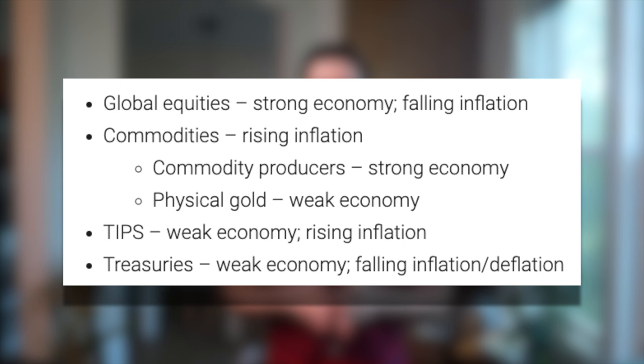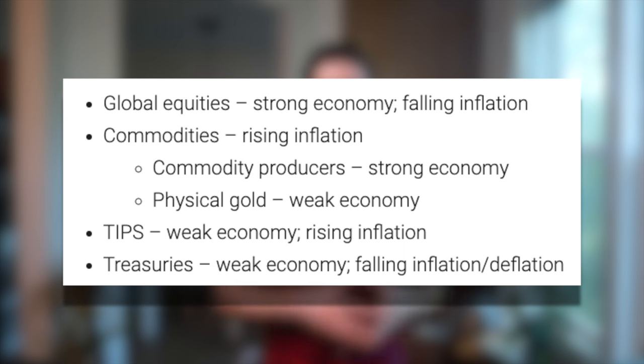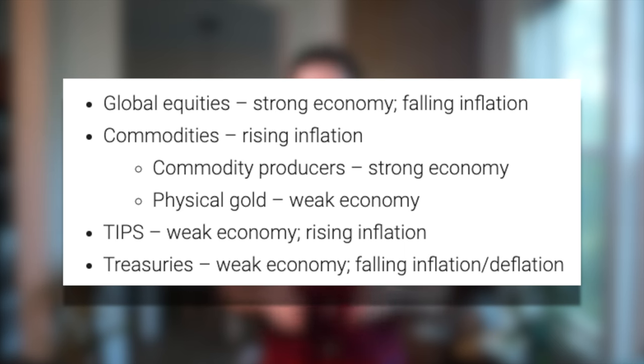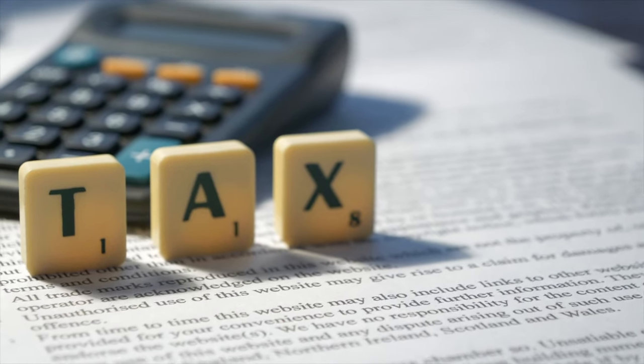Their reasoning for each asset class is as follows: global equities for a strong economy and falling inflation; commodities for rising inflation — within those, commodity producers for a strong economy and physical gold for a weak economy; TIPS for a weak economy and rising inflation; and Treasuries for a weak economy and falling inflation, known as deflation. RPAR is purposefully agnostic toward the prevailing economic environment. The fund even aims to maximize tax efficiency by minimizing income and distributions, so this fund wouldn't be terrible for a taxable environment.